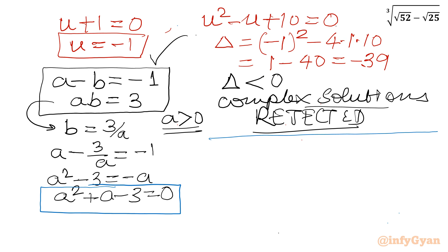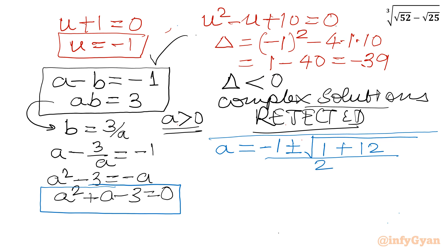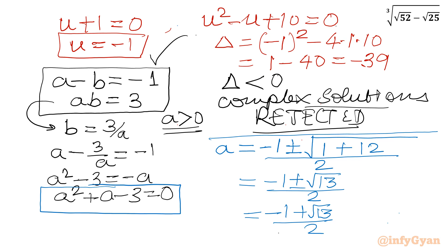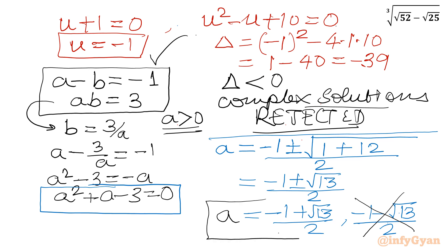Applying the quadratic formula: a equals negative b, which is minus 1, plus or minus square root of (b squared minus 4ac), which is 1 plus 12, divided by 2. So a equals (minus 1 plus root 13) over 2 or (minus 1 minus root 13) over 2. Since a is always positive, we reject the second solution. So our required value of the expression is a equals (root 13 minus 1) over 2. This is our final answer.